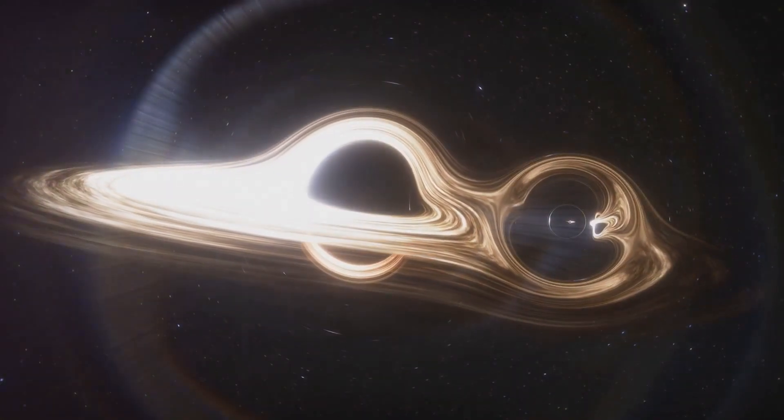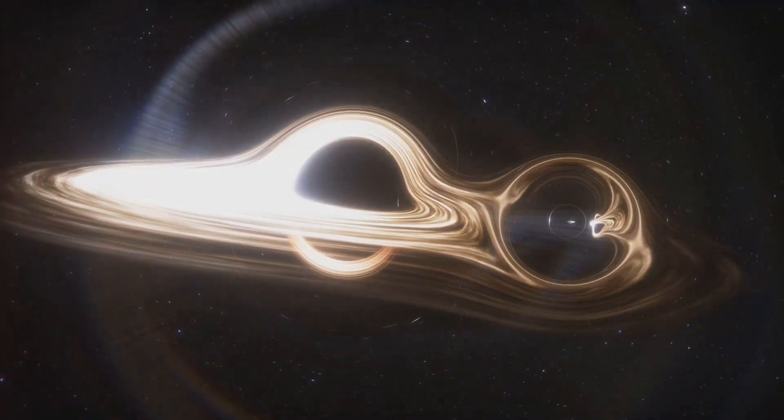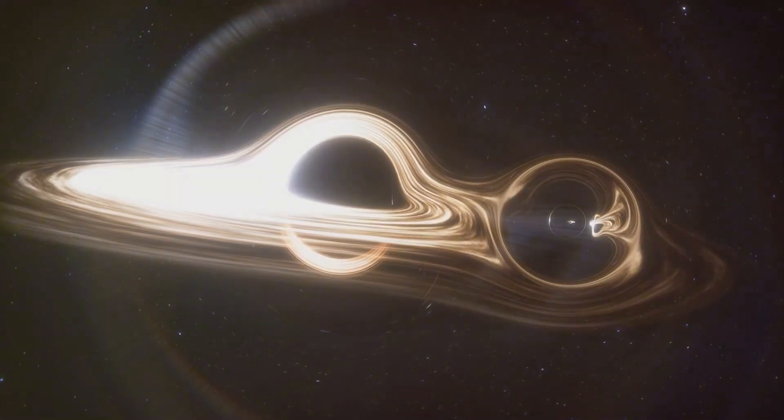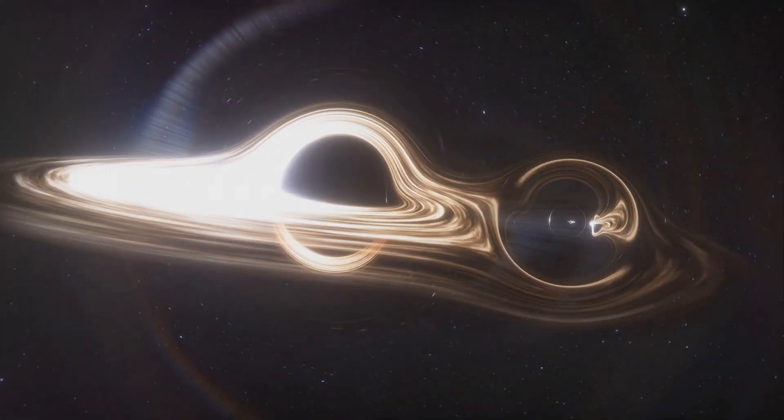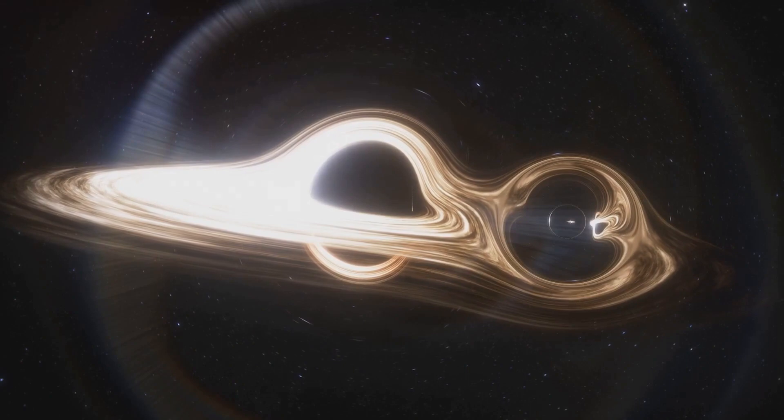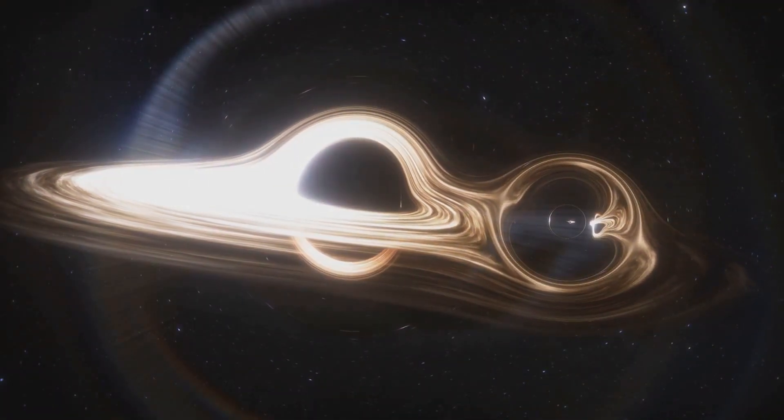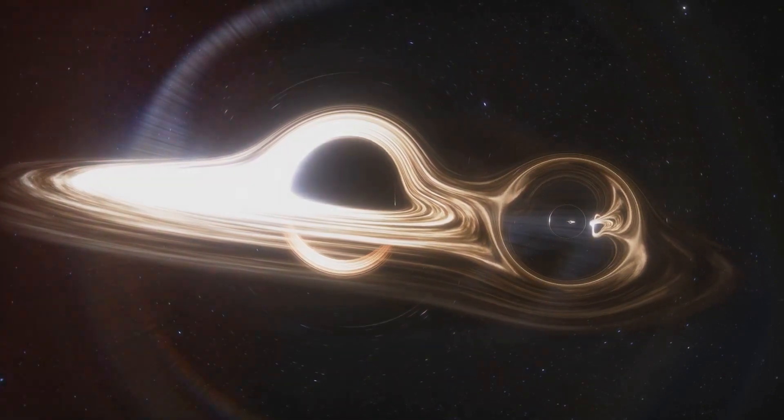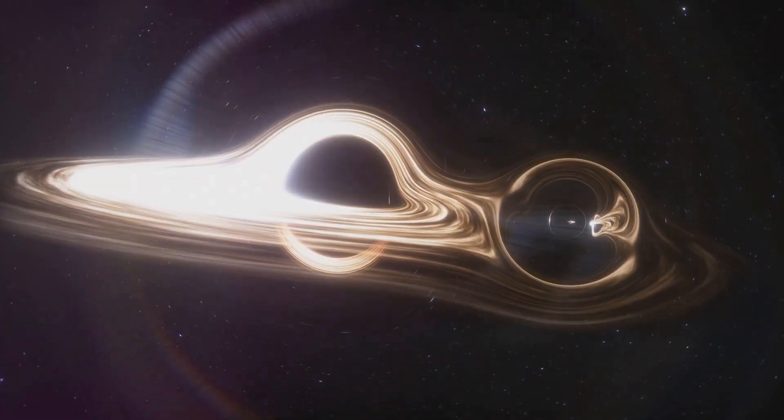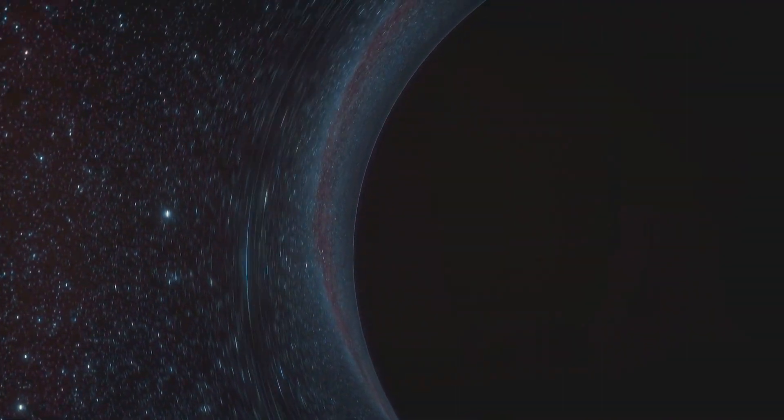Wormholes, in theory, are shortcuts through the fabric of space and time. They're like cosmic bridges connecting two distant points in the universe, a concept that's long intrigued scientists and sci-fi enthusiasts alike. Based on Einstein's theory of relativity, wormholes could exist. The theory suggests that massive objects bend space and time, creating a curvature. If this curvature could be manipulated, it might be possible to create a tunnel or wormhole through space.